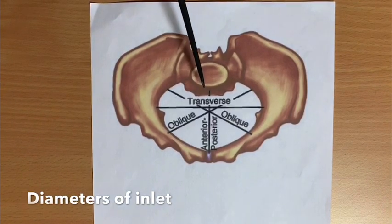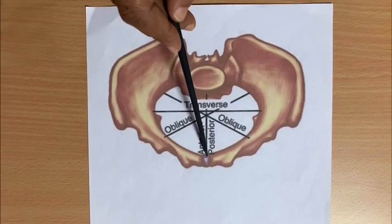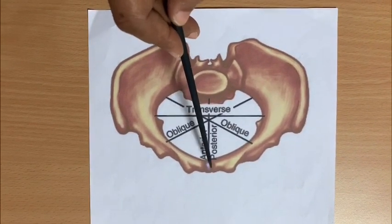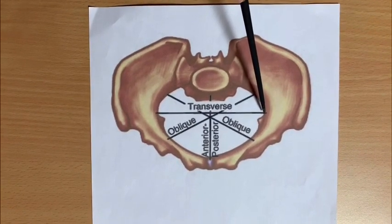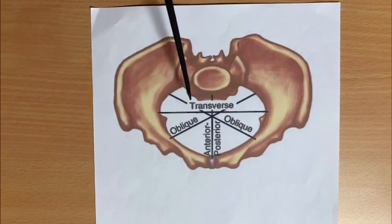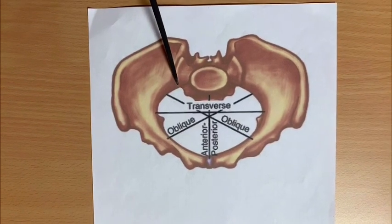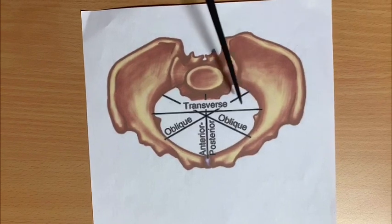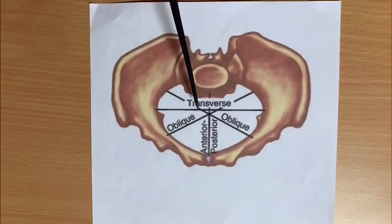The inlet has an anteroposterior diameter which starts from the midpoint of the sacral promontory to the upper border of the pubic symphysis, measuring around 11 cm. The transverse diameter joins two points on the widest part of the linea terminalis and measures 13 cm. There are two oblique diameters: the right oblique is from the right sacroiliac joint to the opposite iliopubic eminence, and the left from the left sacroiliac joint to the opposite iliopubic eminence, measuring around 12 cm.